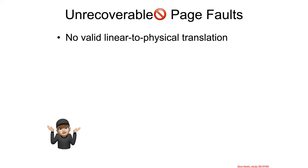Some of the unrecoverable page faults are just when there's straight-up no valid linear to physical translation. This could be because some process has generated an address out of thin air or out of an error, and it attempts to access memory at a given address, but that address was never legitimately mapped into memory. This is again why an operating system should initialize page tables to zero so that if someone tries to access a random address that's not expected to be there, it will lead to the MMU hitting a present bit of zero and causing a page fault. If it does not correspond to one of the recoverable cases, the operating system can just kill the process or do something else.